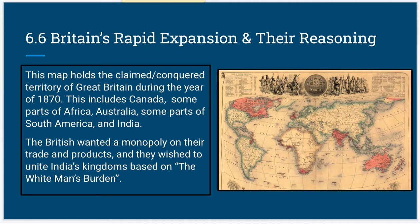Britain's rapid expansion: the map on the right holds the claimed and conquered territory of Great Britain during the year 1870. This includes Canada, some parts of Africa, Australia, some parts of South America, and India. The British really desired a monopoly over their trade and mass products, to create the most economic influence and gain. They wished to unite India's kingdoms based on the white man's burden.